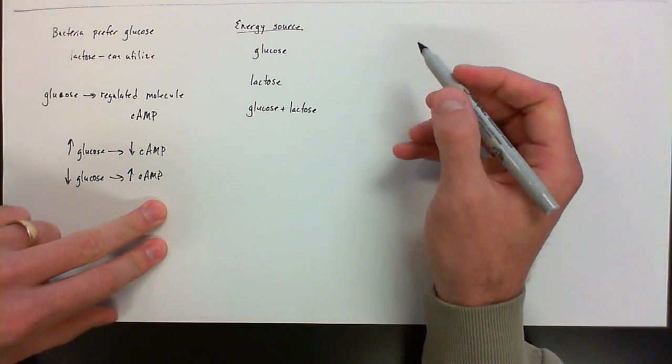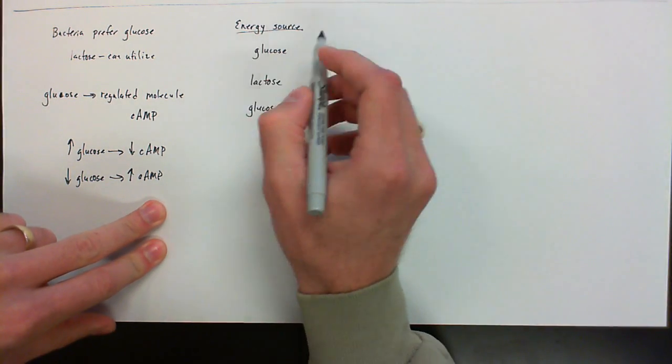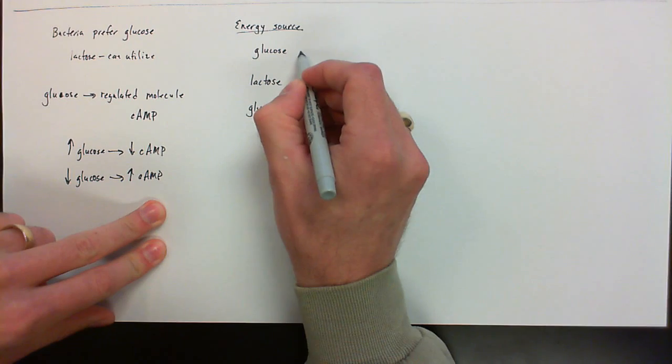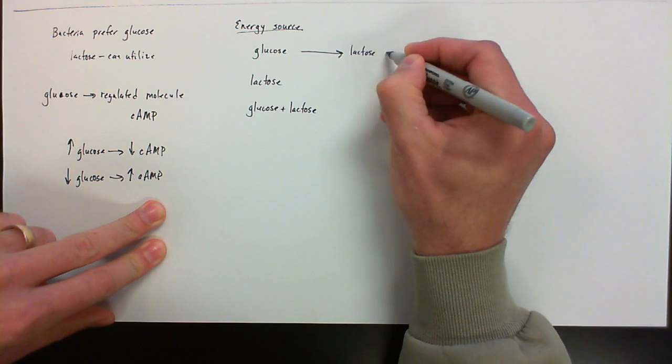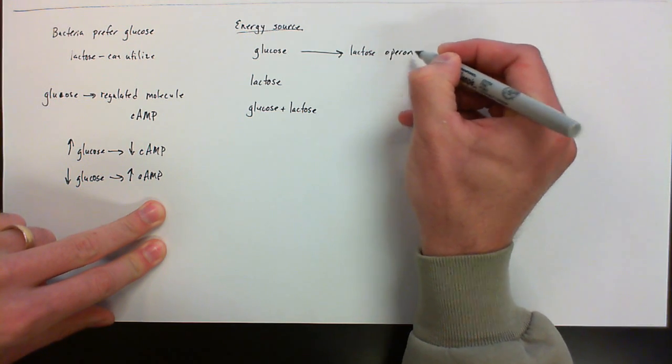To further expand on this, what we're going to see here is if the energy source available to the bacteria is glucose, you're going to see that the lactose operon is going to be turned off.